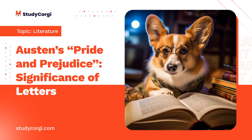Austen satirizes the social behavior towards money, which was, in those times, a major preoccupation. People are judged based on their fortune and social status, as illustrated by Mrs. Bennet. Certainly, if Mr. Bennet died, the Bennet girls would be left with nothing, since when there is no male inheritor all the family's possessions are given to a male cousin. This threat is what makes Mrs. Bennet obsessed with her daughters marrying wealthy men. For her, happiness is measured only in terms of money. This also explains why Mr. Collins is surprised at Elizabeth's refusal of his proposal.